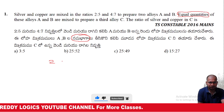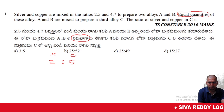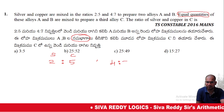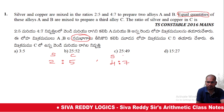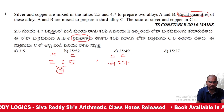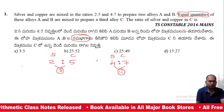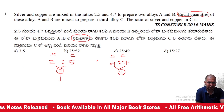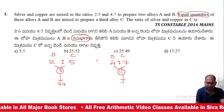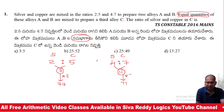Alloy A has silver to copper ratio 2:5 — total 7 parts. Alloy B has silver to copper ratio 4:7 — total 11 parts. The LCM of 7 and 11 is 77. So alloy A has 77 parts and alloy B has 77 parts. 7 table is 11 times; 11 table is 7 times.